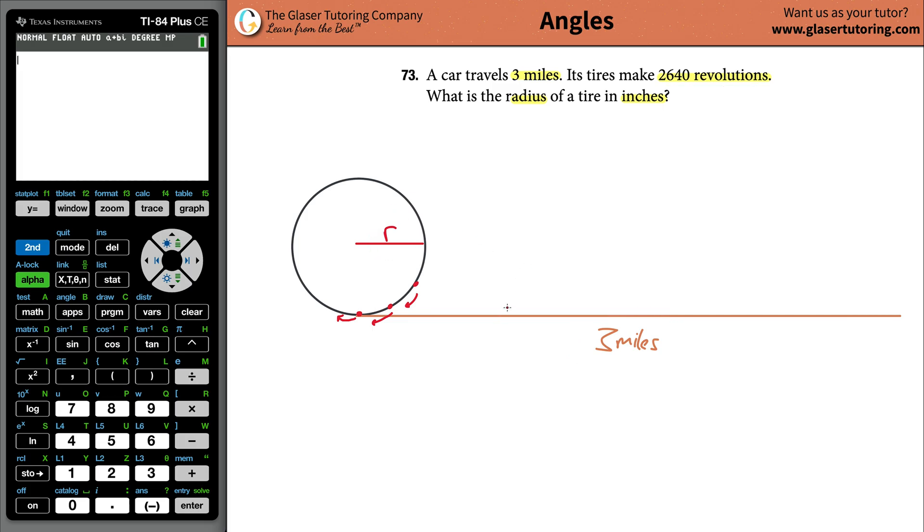Consider this. If the tire makes 2,640 revolutions and it traveled a total of three miles, my question is then, what's the circumference of the tire? Let's start there.